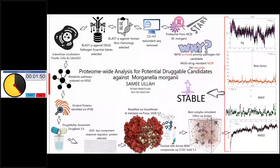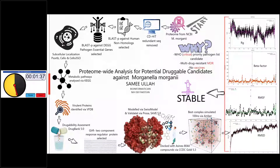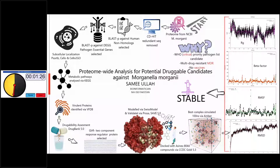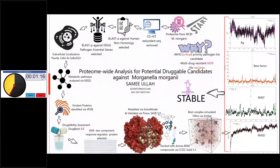The druggability assessment via DrugBank 5.0 resulted in GLRR, a two-component response regulator protein. Unfortunately, the crystal structure of GLRR was absent in RCSB, so we used comparative modeling and modeled it via Swiss-Model, validated via ProSA and SAVES 5.0. We then retrieved 8,044 antibacterial compounds from Azenex, and before docking, these compounds and the receptor were prepared and docked via CCDC GOLD 5.3. The best docked complex was selected based on the number of hydrogen bonds, hydrophobic interactions, and pi-pi stacking formation.